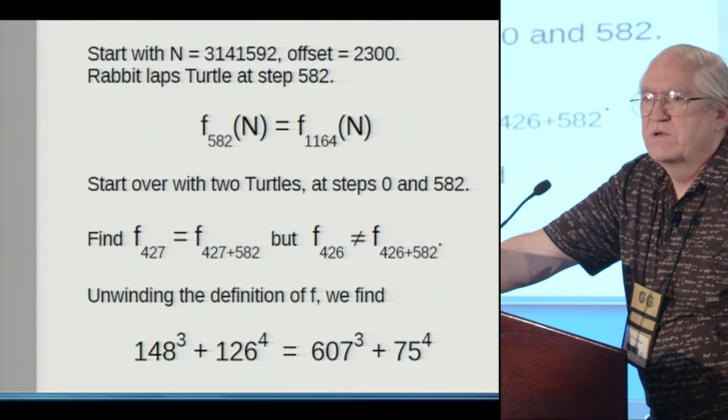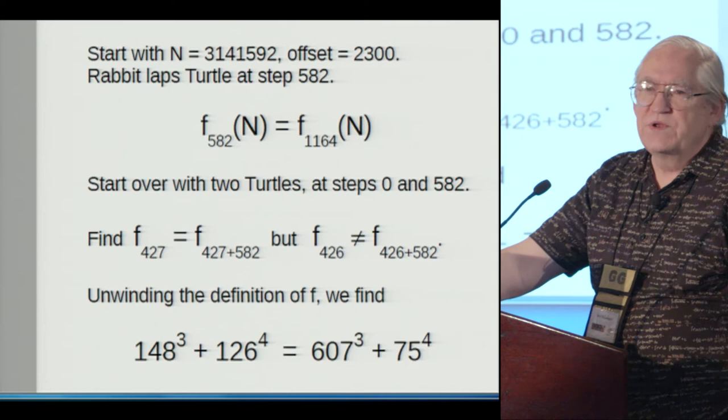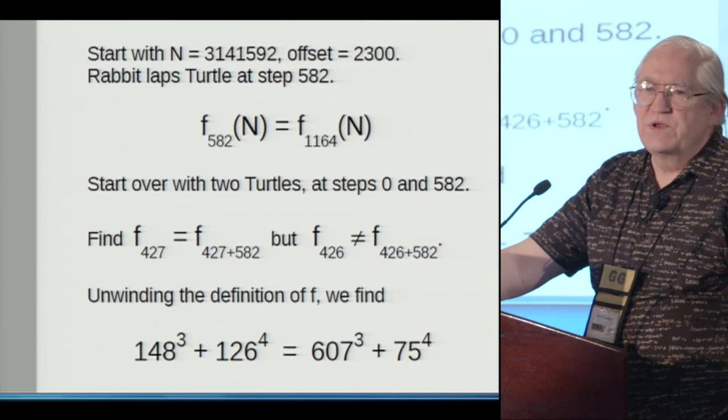We can then unwind the definition of F. And again, I'm leaving out details, it's not hard. And we discover this example of a number that's representable as a cube plus a fourth power two ways.